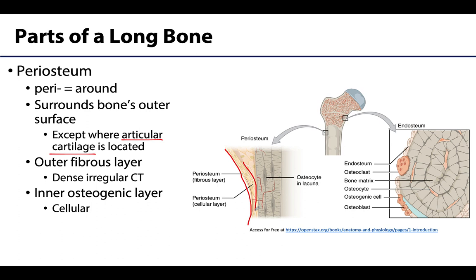Sharpey's fibers allow for that intimate relationship and connection between the periosteum and the bone, actually interdigitating through there. Additionally, muscle tendons and ligaments will often intertwine with these structures for a fully functional musculoskeletal system, so these connections are very important.